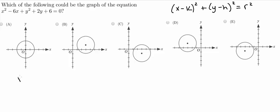So if we have x squared minus 6x plus some number, I'm going to leave it blank, plus y squared plus 2y plus some number is equal to negative 6.